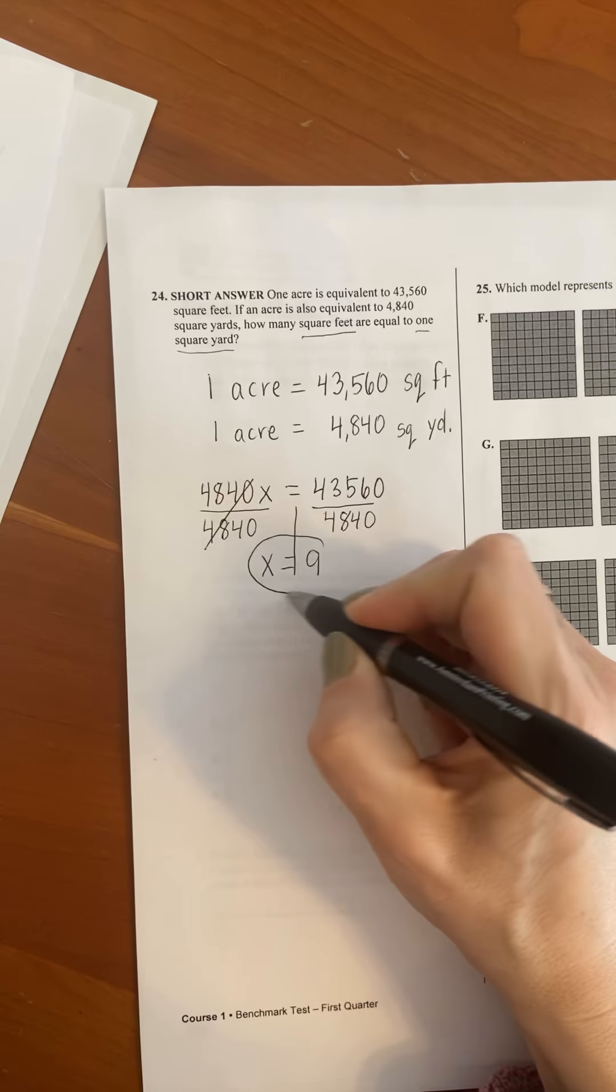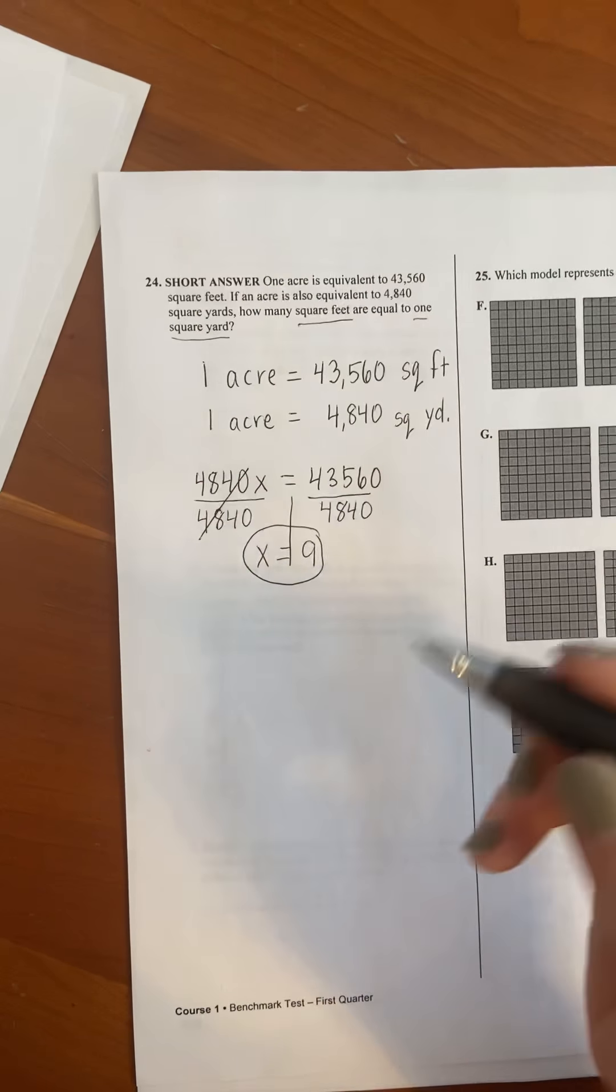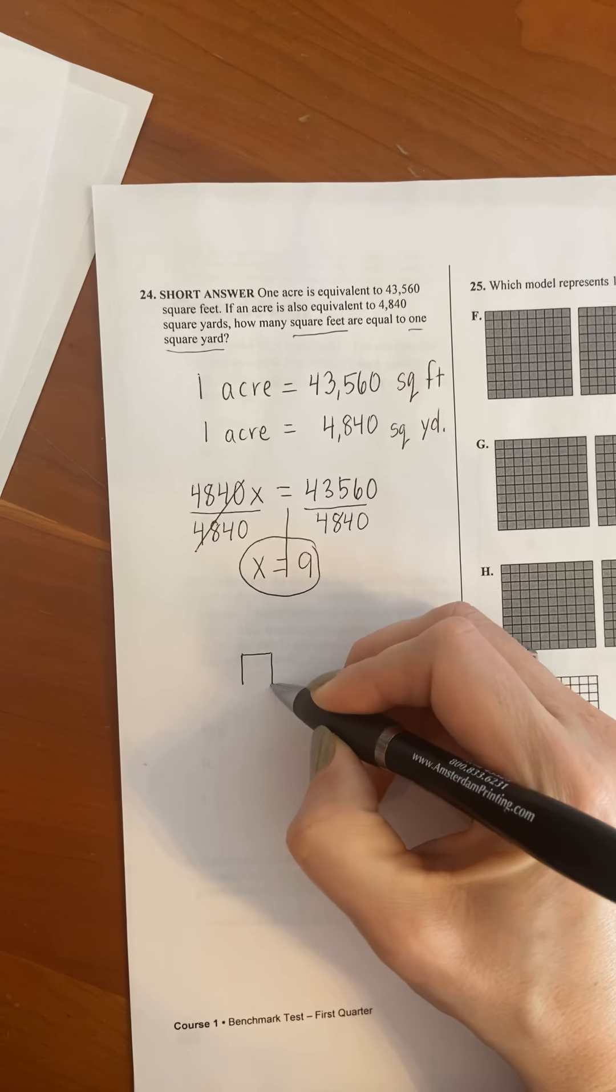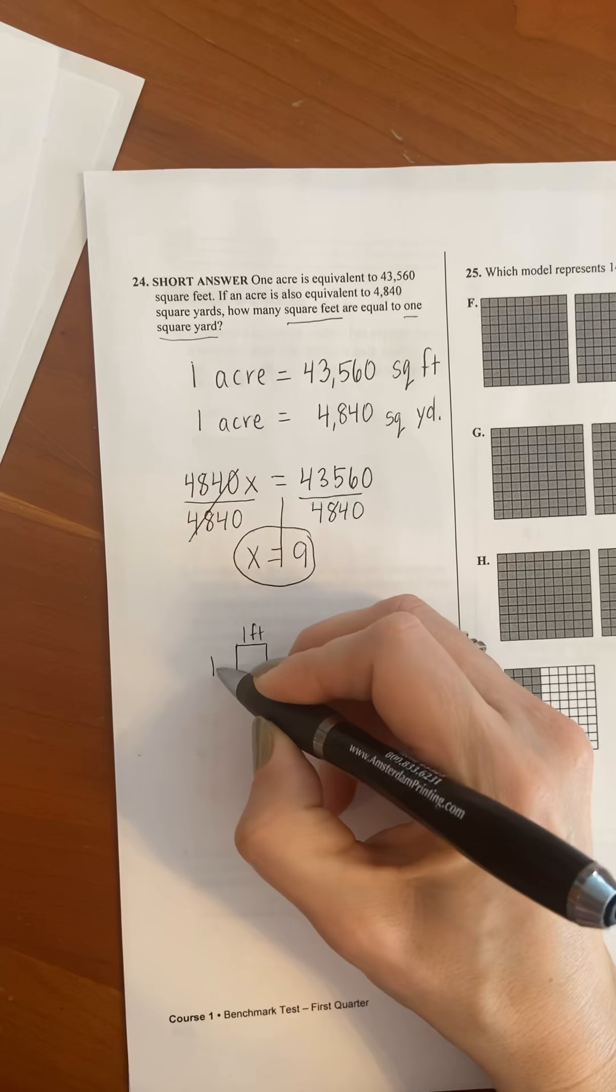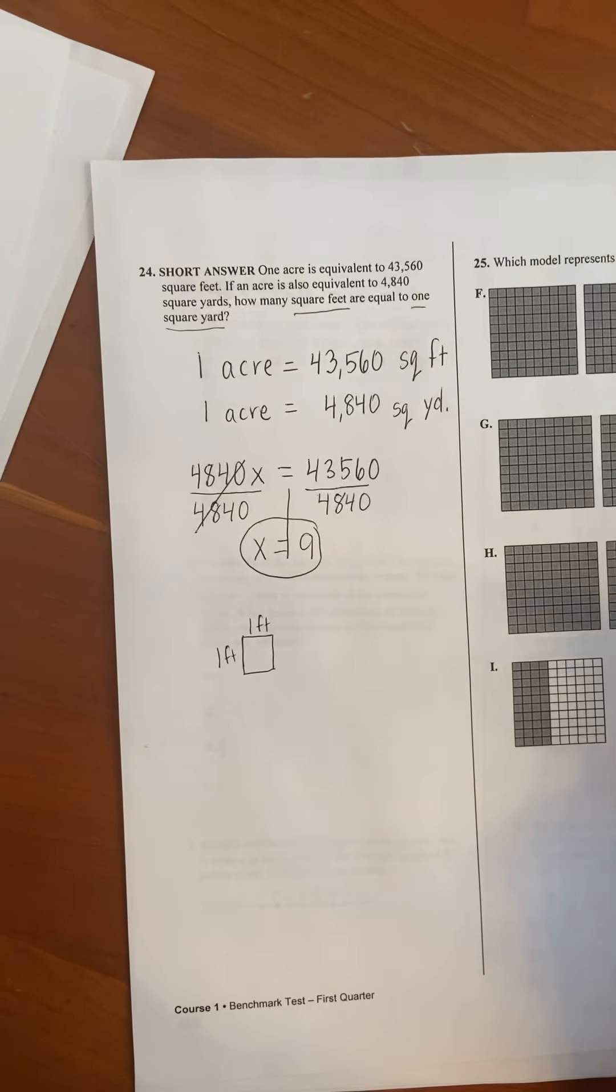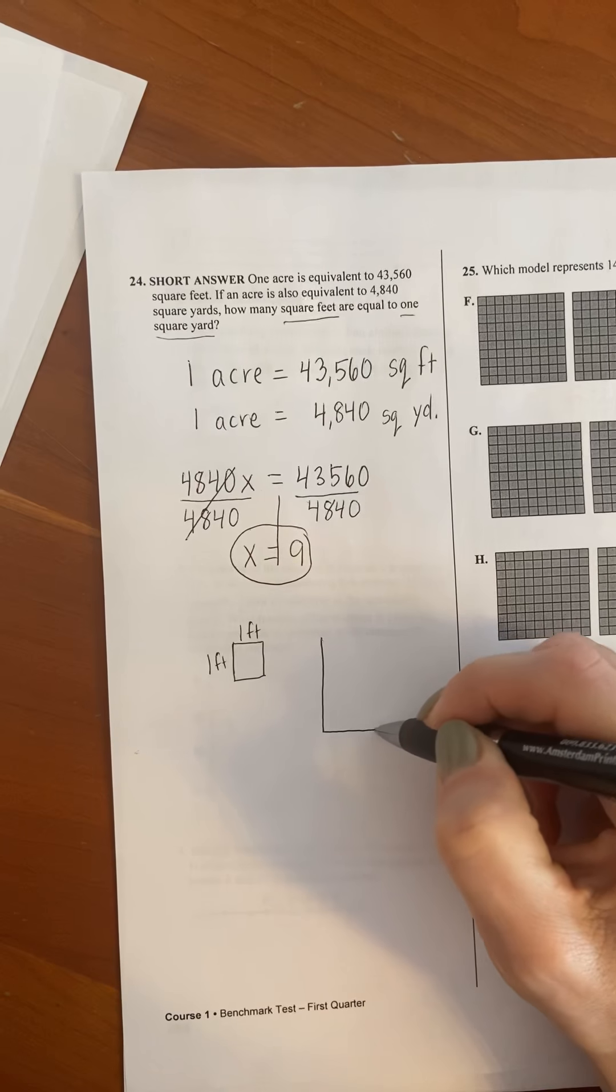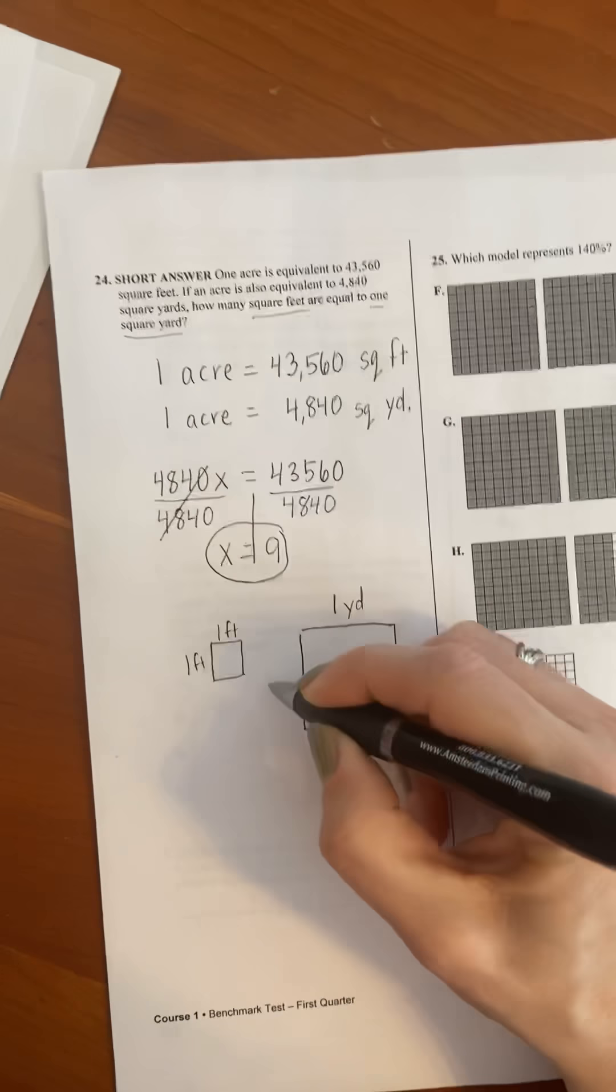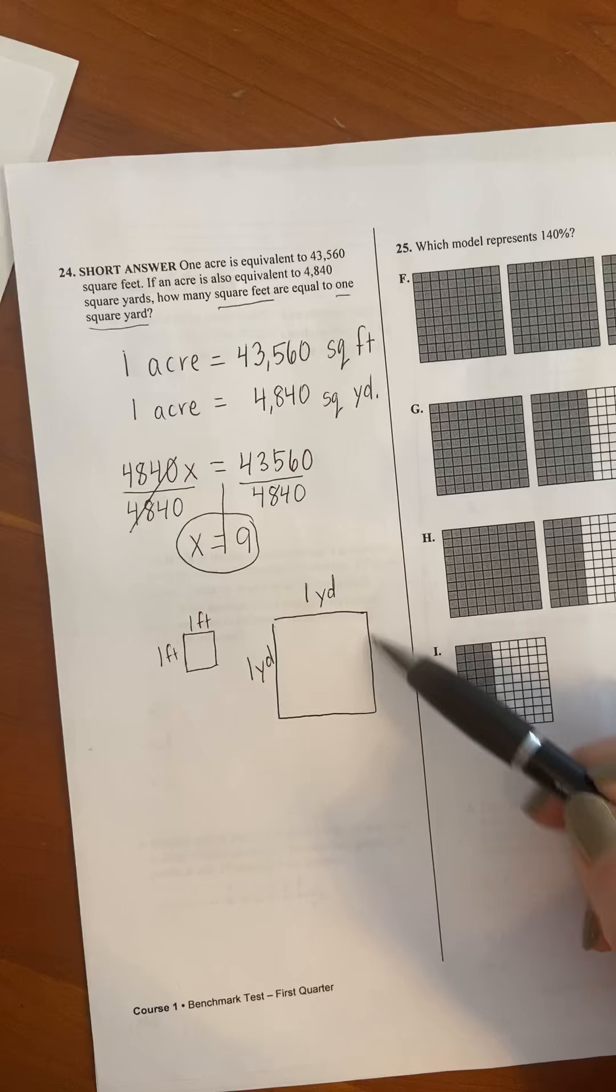So that means that there are nine square feet in one square yard. But what's crazy about this question is that you don't need any of this information to answer this question. One square foot is just talking about a box that is one foot by one foot. It's a one foot square box. One square yard would be the same thing except the box is bigger because it's one yard by one yard.